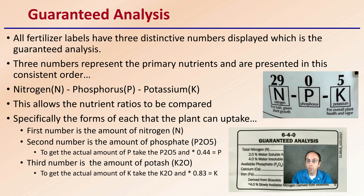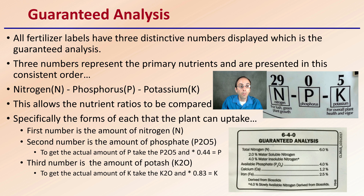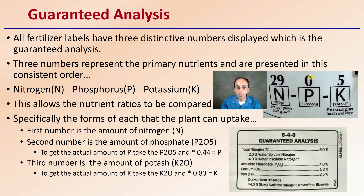With fertilizer, we have what's called a guaranteed analysis. All fertilizer labels have three distinctive numbers displayed, which is the guaranteed analysis. These numbers represent the primary nutrients and are presented in this consistent order: nitrogen, followed by phosphorus, followed by potassium.